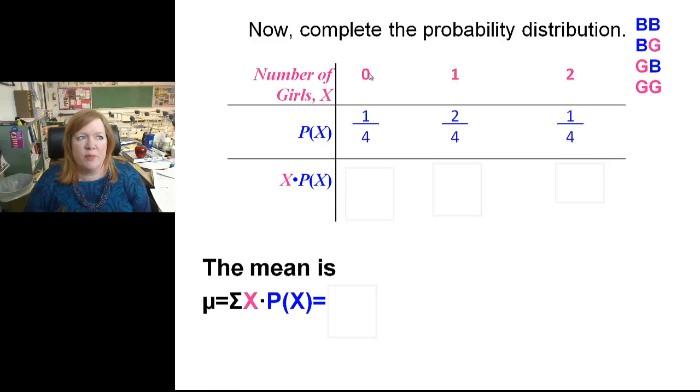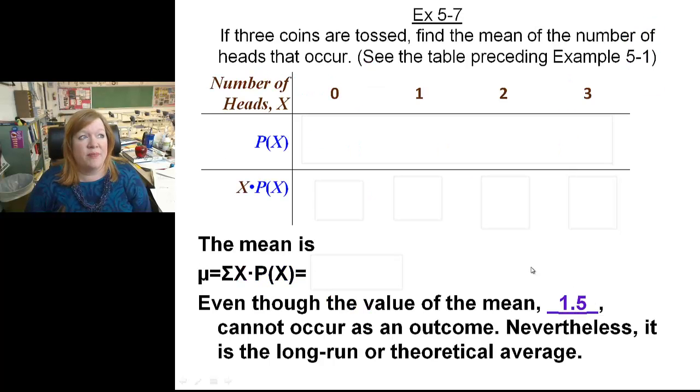...we know we're going to have to multiply our random variable x times the probability associated with it. So zero times a fourth is zero. One times two fourths is two fourths, or one half. Two times one fourth is one half as well. If we add those up, the mean is going to be one. You add them up, zero plus a half plus a half, you get one. That's the expected girl. Kind of figured that out.